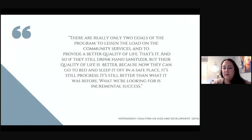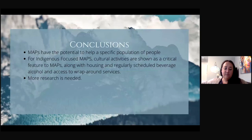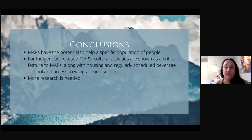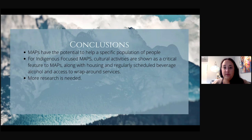What we're looking for is incremental success. In conclusion, MAPs have the potential to help a specific population of people who are living on the edge of society with severe alcohol use disorder, are precariously housed, and for whom other forms of treatment have not been successful. In the context of Indigenous health, cultural activities are shown as a critical feature to MAPs, along with housing, regularly scheduled beverage alcohol, and access to other wraparound services. The biggest lesson learned from the rapid review is that more research in both the Canadian and Indigenous context is needed to determine a better picture of the harms and benefits of this type of programming.